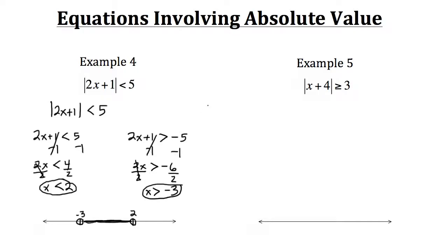Now let's take a look at example 5. Again we need to look at the positive and the negative side of this absolute value. So we'll have x plus 4 is greater than or equal to 3, and we'll also have x plus 4 is less than or equal to negative 3. Remember, when we switch the signs we need to switch the direction of the inequality as well.